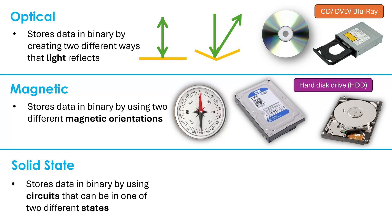Solid state storage generates some heat but next to no noise, because it uses circuitry to represent binary data. Circuits can be in one of two different states — like switches. A switch can be either off or on: off represents binary zero, on represents binary one. So a single switch represents one bit. To store a terabyte you'd need trillions of switches in circuits, but that's how solid state storage works.